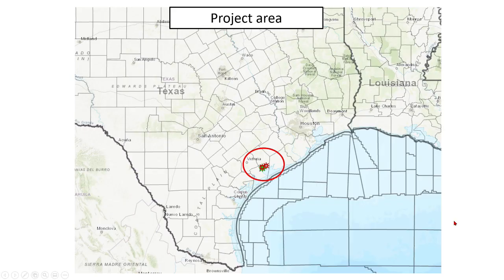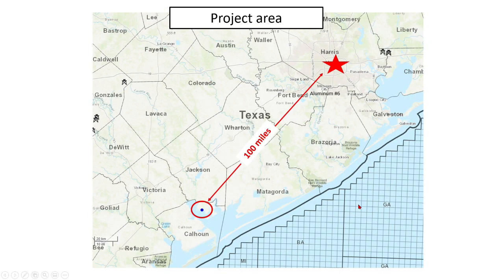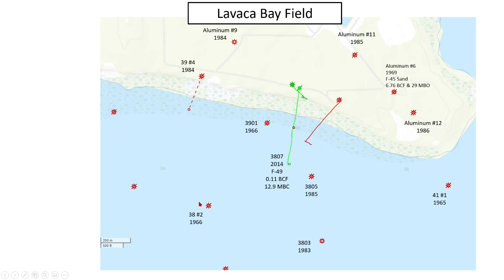Here's the study area along the Gulf Coast. The original work was done in 2013. Here's an expanded map — the project area is in Calhoun County, about 100 miles southwest of Houston. Here's a blow-up of the field area; it's the Lavaca Bay field, with some of the wells we've labeled that we're going to be looking at.